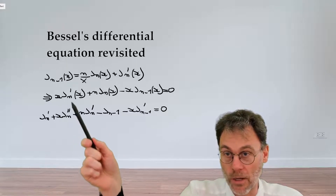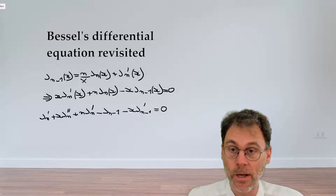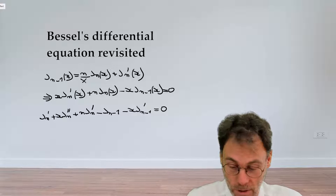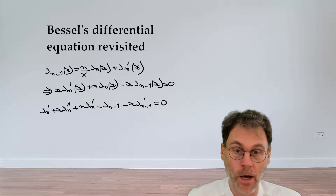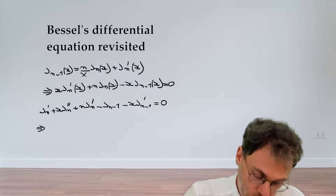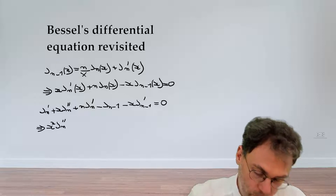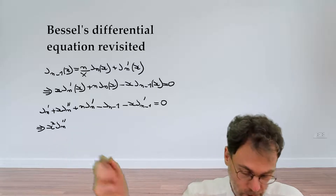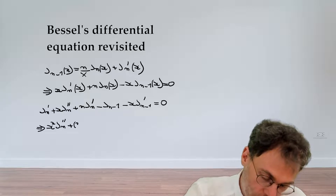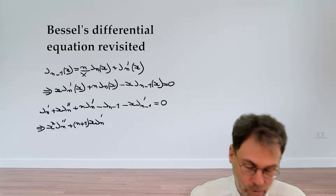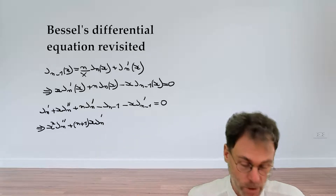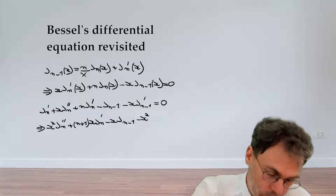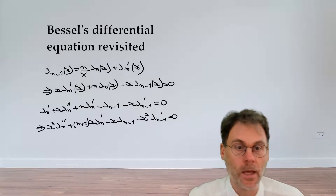Now we have a second-order derivative. However, in Bessel's differential equation that second-order derivative is multiplied by x squared, not x. So we multiply everything by x and rearrange terms, starting with x² J_n''(x), then combining terms to get (n+1)x J_n'(x), minus x J_{n-1}(x) minus x² J_{n-1}'(x) = 0.